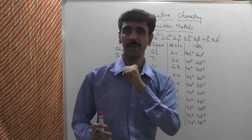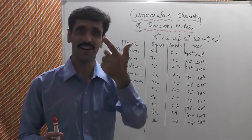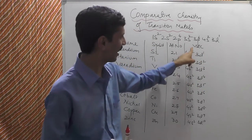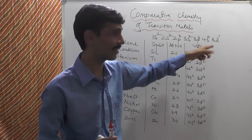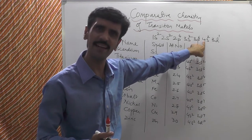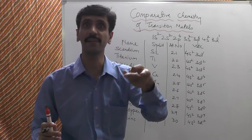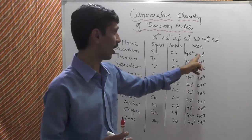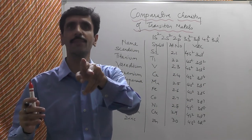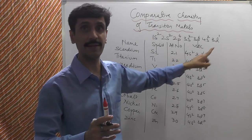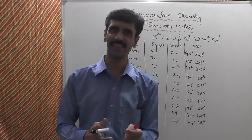Now the question in your mind is: valence shell means the outermost shell, and the last shell is 4, so why are we considering 3d alongside 4s? The 3d belongs to the second-last shell, not the last shell. So why is it being considered as part of the valence shell?